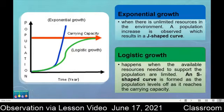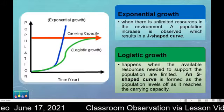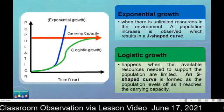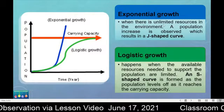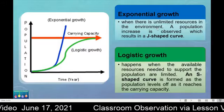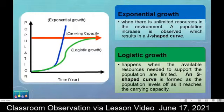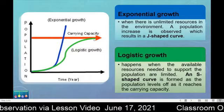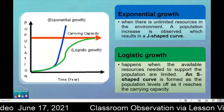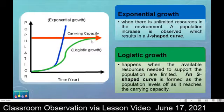Logistic growth, on the other hand, happens when the available resources needed to support the population are limited. An S-shaped curve is formed as the population levels off as it reaches the carrying capacity. For exponential growth, resources are unlimited, so the population keeps increasing. For logistic growth, there are limited resources, so once it reaches the carrying capacity, population stops growing, resulting in an S-shaped curve.